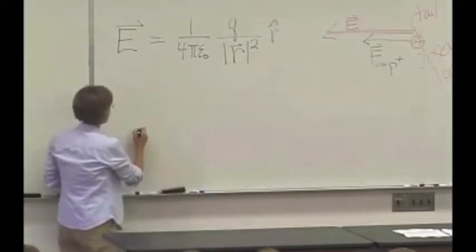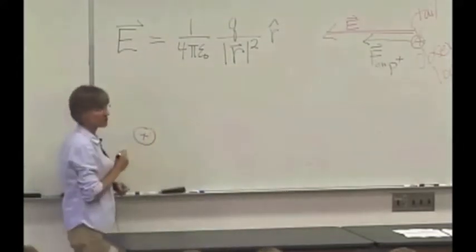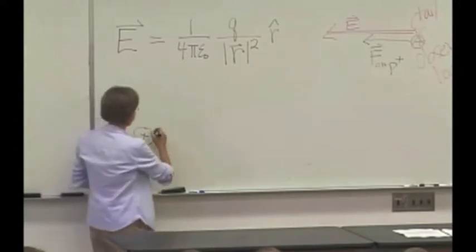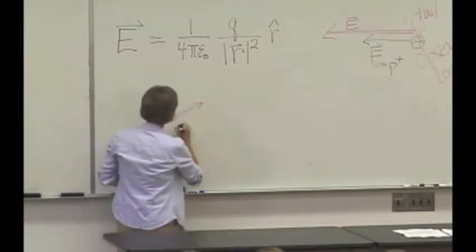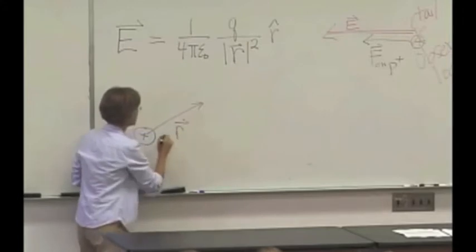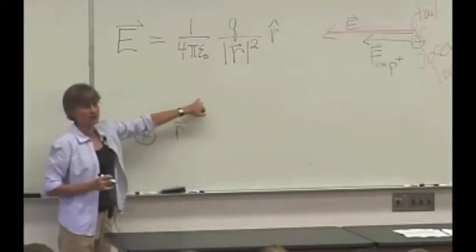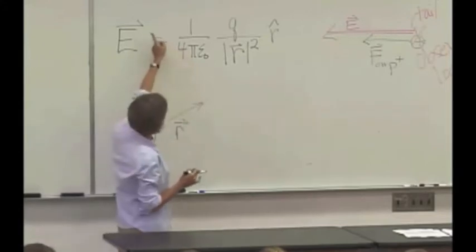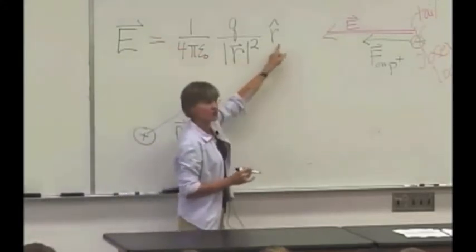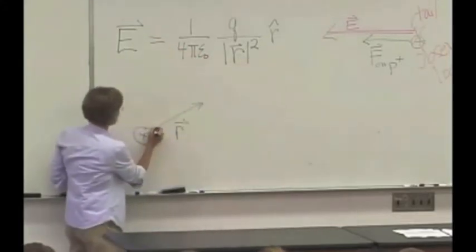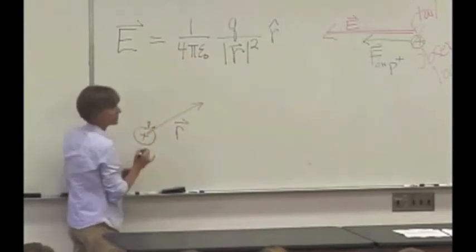What does that mean? It says that if we've got a particle here, say a proton, and we draw a vector R to an observation location here, then the electric field due to this particle points in the direction of R hat, which is this little unit vector here.